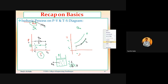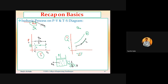On the TS diagram for isobaric heat rejection, with temperature on one axis and entropy on the other, and pressure constant, I draw on the constant pressure line. Since both temperature and entropy decrease during heat rejection, the arrow points in the downward direction for both temperature and entropy — from point one to point two — representing the isobaric heat rejection process.